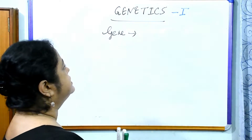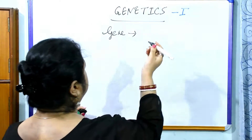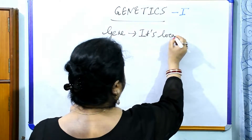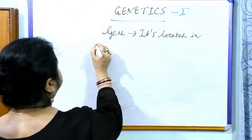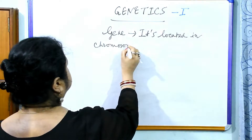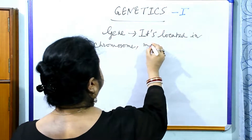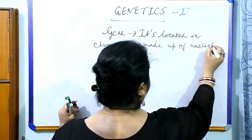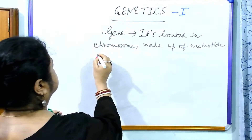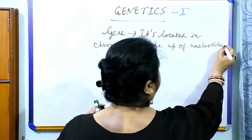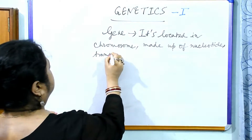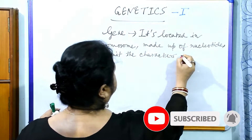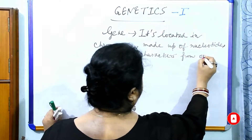So, what is a gene? We can say it is located in the chromosome, it is made up of nucleotides, and it transmits characters from one generation to other.